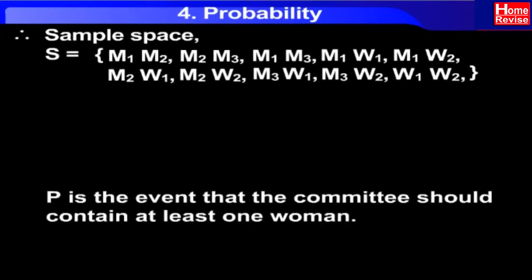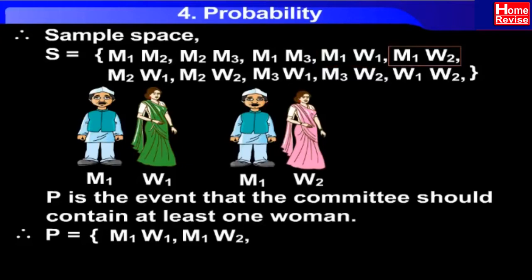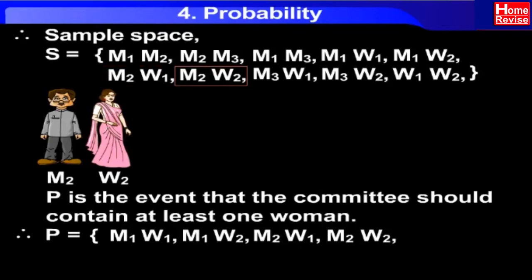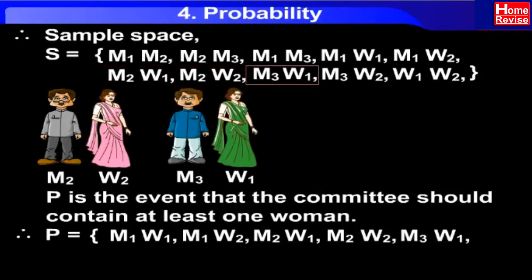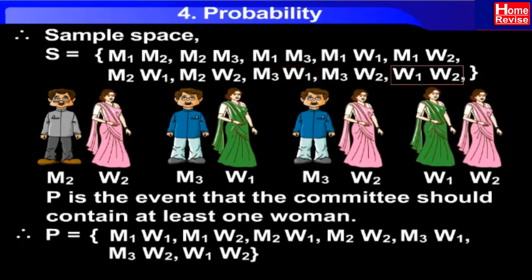Now, P is the event that the committee should contain at least one woman. Therefore, P = {M1W1, M1W2, M2W1, M2W2, M3W2, M3W1, W1W2}. Therefore, N(P) = 7.